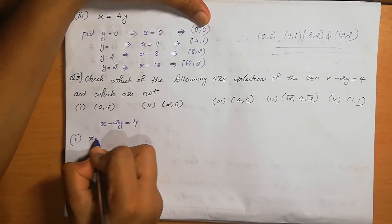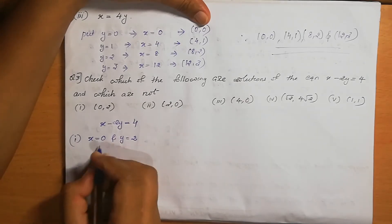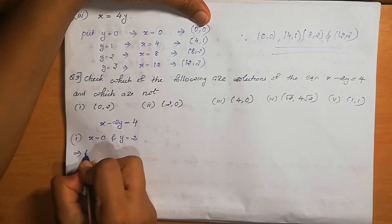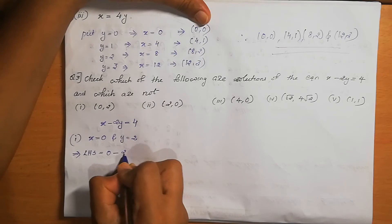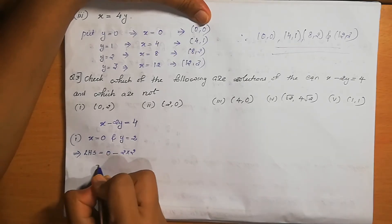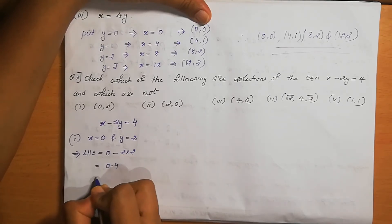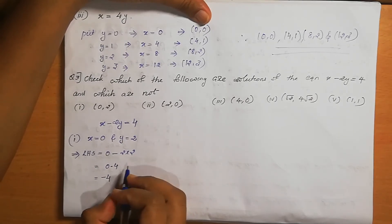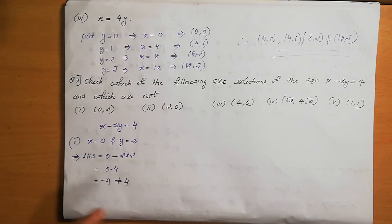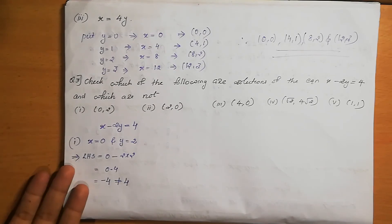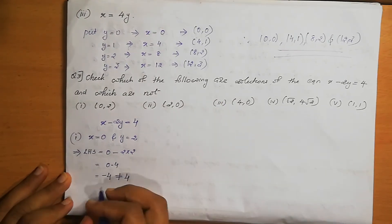LHS = 0 − 2×2 = 0 − 4 = −4. Since −4 ≠ 4, LHS ≠ RHS. Therefore, (0, 2) is not a solution of this equation.